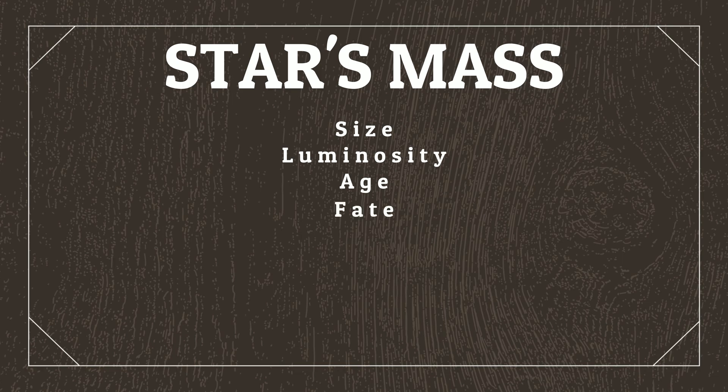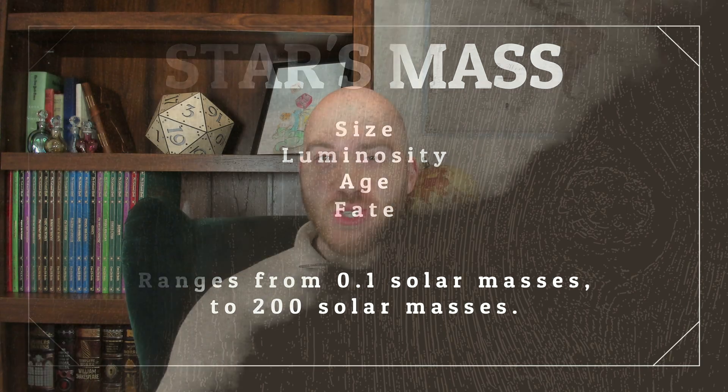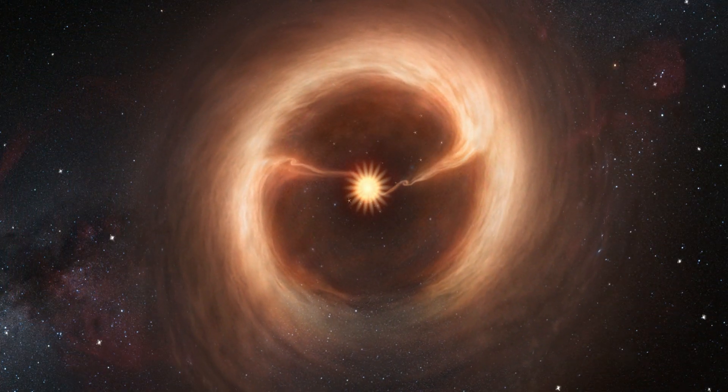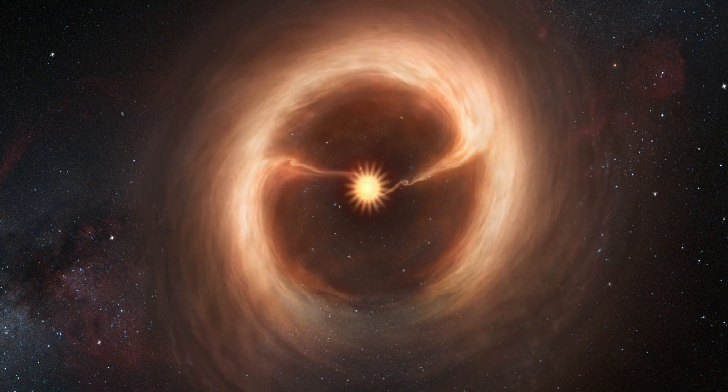A star's mass can be anywhere between 0.1 solar masses — about 10% the size of our sun — all the way up to 200 solar masses. So we can just make a star 200 times as massive as the sun and call it a day, right? Well, if you want your star to have planets that can support life, then probably not. The more massive the star is, the more material it sucks in from its surrounding environment to form itself, and more importantly, the less time it lives for before going supernova.